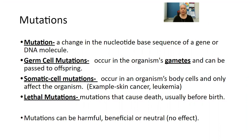Somatic cell mutations — somatic cells are those body cells. They occur in an organism's body cells and only affect the organism. Examples of these kinds of mutations could be skin cancers, leukemia, anything where we have those somatic cells growing in a way that they shouldn't be.